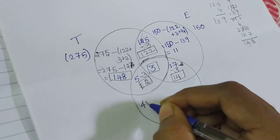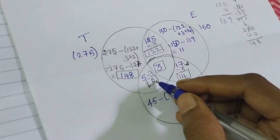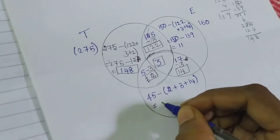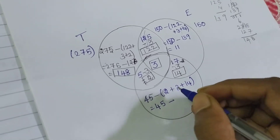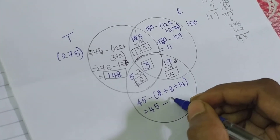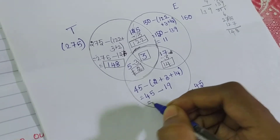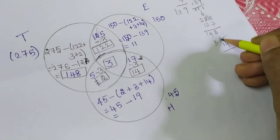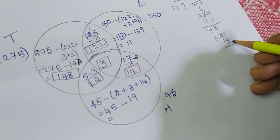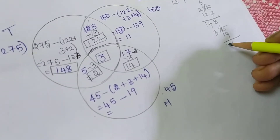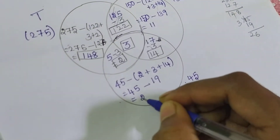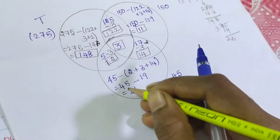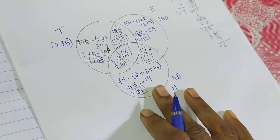For Hindi, the total is 45. Ignoring the intersection parts: 2 plus 3 plus 14 equals 19. So 45 minus 19 equals 26. I am getting 26 families for only Hindi newspaper.